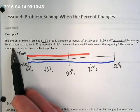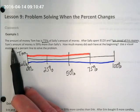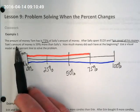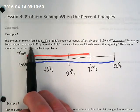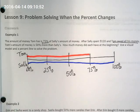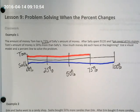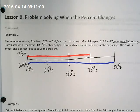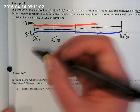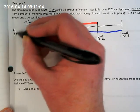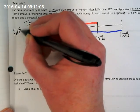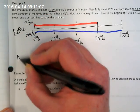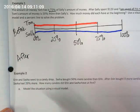Sally spent $120, Tom saved all his money, and Tom's amount of money is now 50% more than Sally's. How much money did each have at the beginning? Use a visual model and a percent line to solve the problem.